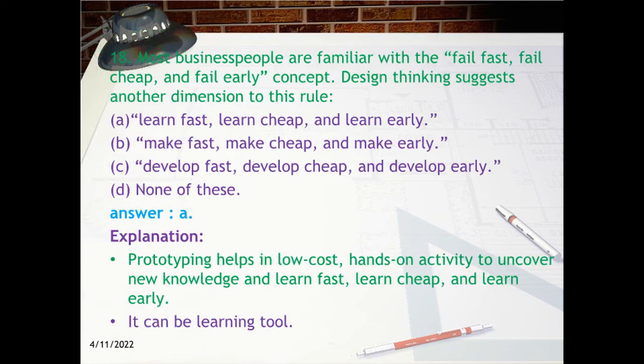Question 18: Most business people are familiar with the fail fast, fail cheap, and fail early concept. Design thinking suggests another dimension to this rule — A. Learn fast, learn cheap, and learn early. B. Make fast, make cheap, and make early. C. Develop fast, develop cheap, and develop early. D. None of these.